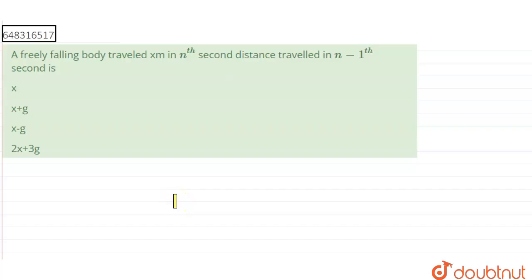Hi, so let's start the question. The question says a freely falling body traveled x meters in the nth second. Distance traveled in n minus 1 second is? We are given four different options: x, x plus g, x minus g, and 2x plus 3g.